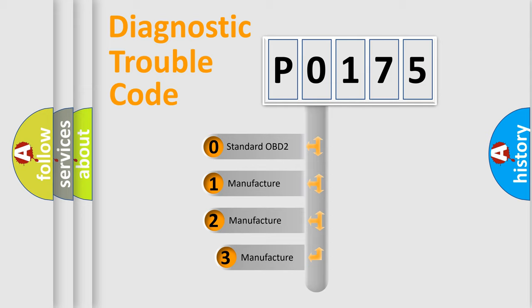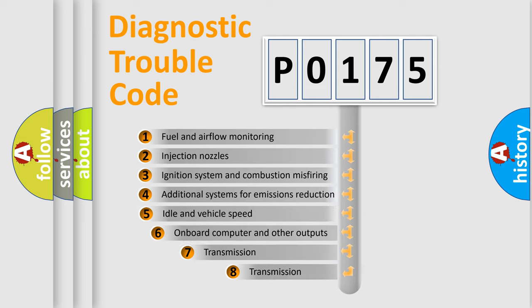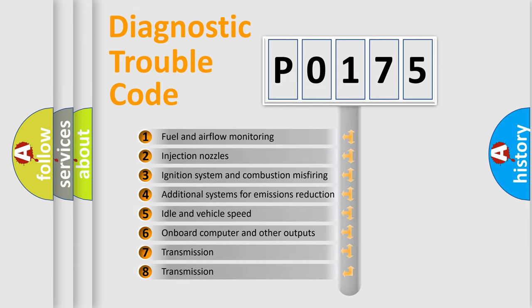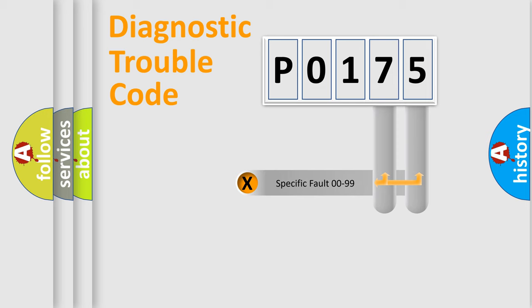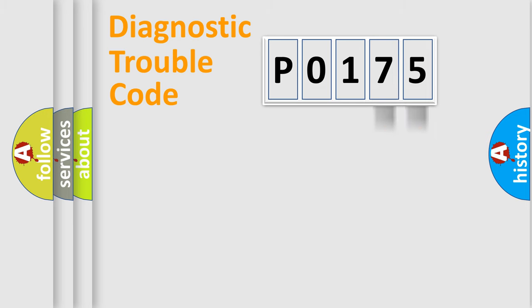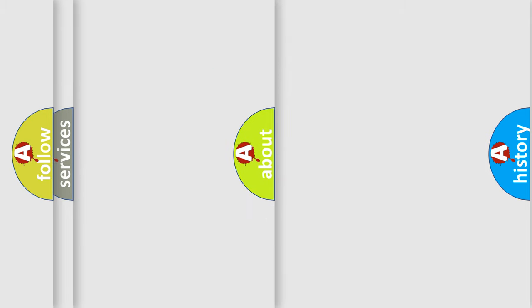If the second character is expressed as 0, it is a standardized error. In the case of numbers 1, 2, or 3, it is a more manufacturer-specific expression of a car-specific error. The third character specifies a subset of errors. The distribution shown is valid only for the standardized DTC code, and only the last two characters define the specific fault of the group. This division is valid only if the second character is expressed by the number 0.